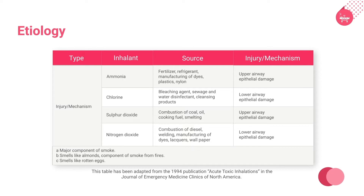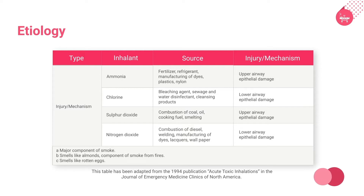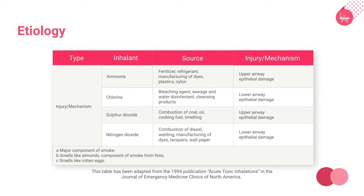The irritants cause extensive cell injury within the respiratory tract. Irritant gases include ammonia, chlorine, sulfur dioxide, and nitrogen dioxide. These gases are found in various chemicals that are part of daily or commercial use. These irritants injure the upper and lower airway epithelium, which leads to respiratory insufficiency.